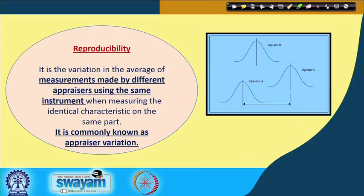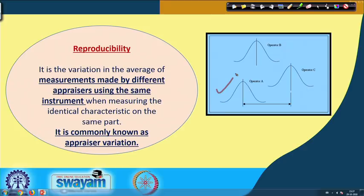Reproducibility is also called appraiser variation, inspector variation, or operator variation. It is the variation in the average of measurements made by different appraisers using the same instrument. In the figure, Operator A, Operator B, and Operator C show differences even in their mean values, and this difference indicates a concern with reproducibility.